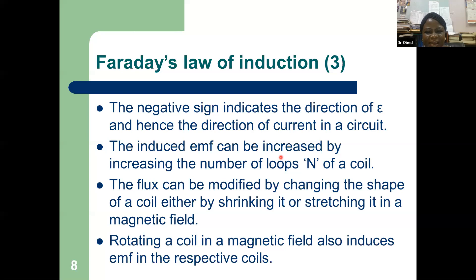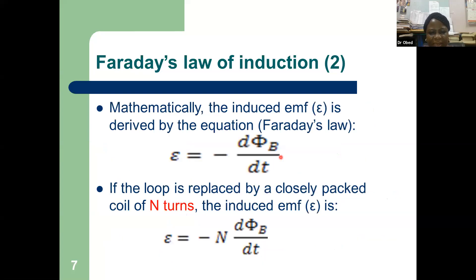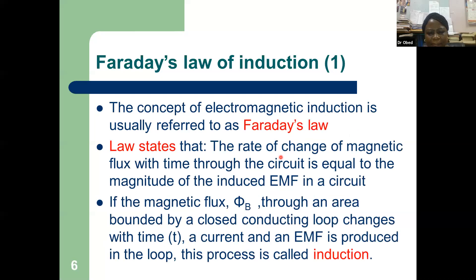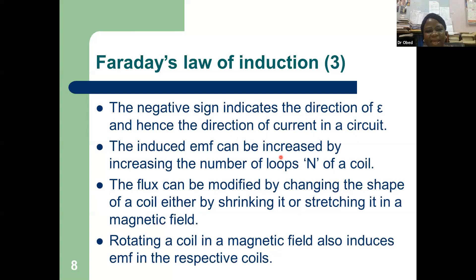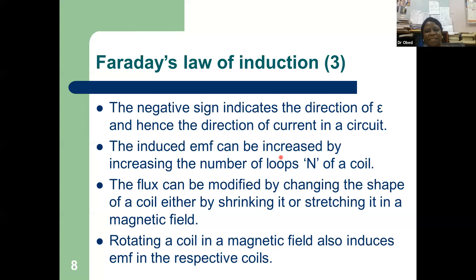The negative sign indicates the direction of epsilon and hence the direction of current in the circuit. The induced EMF can be increased by increasing the number of loops N of a coil. The flux can also be modified by changing the shape of a coil — either by shrinking or stretching it in a magnetic field. When the coil is rotated in a magnetic field, an EMF is induced in the respective coils.